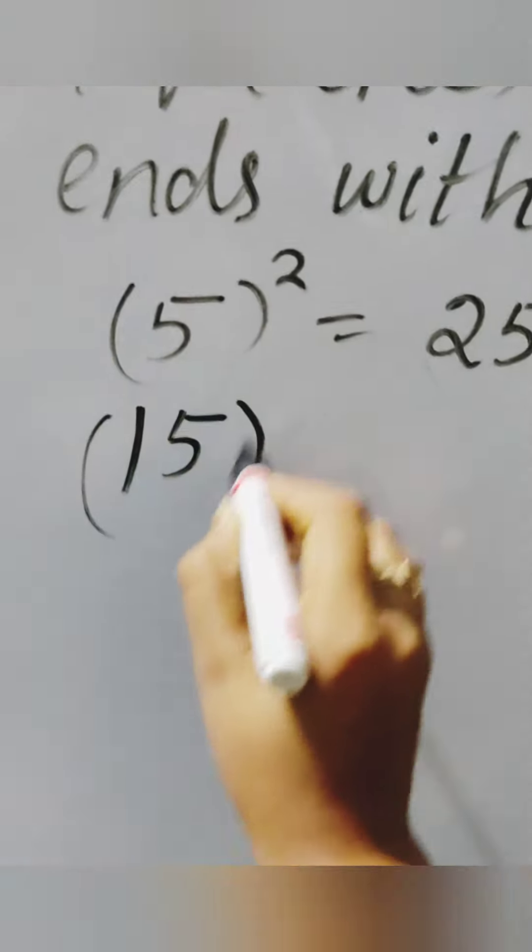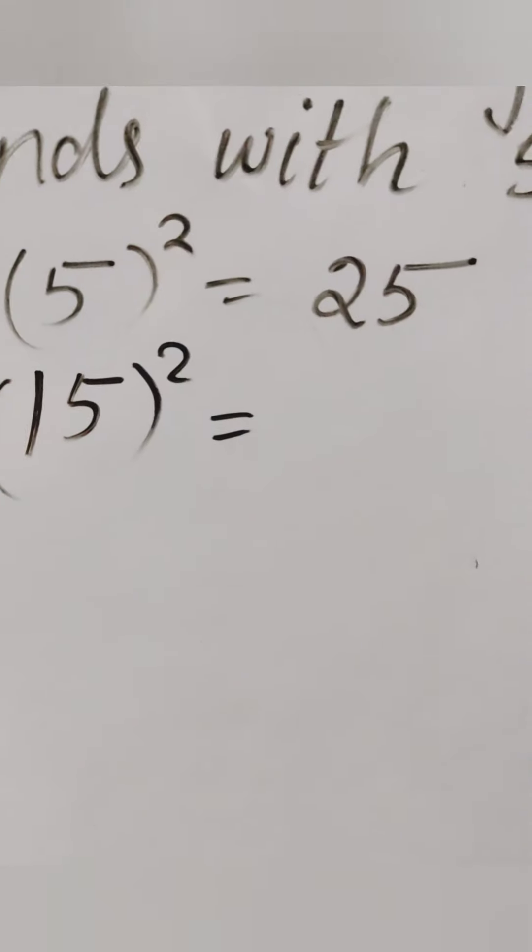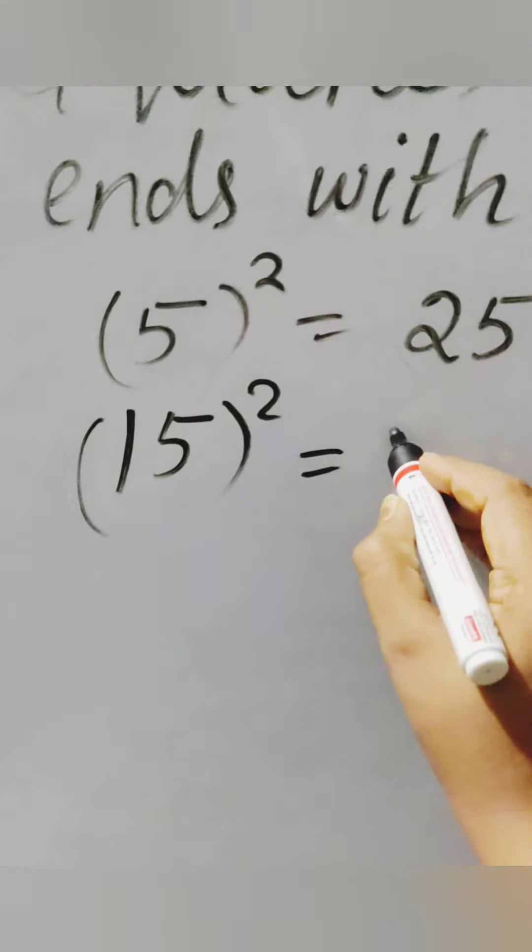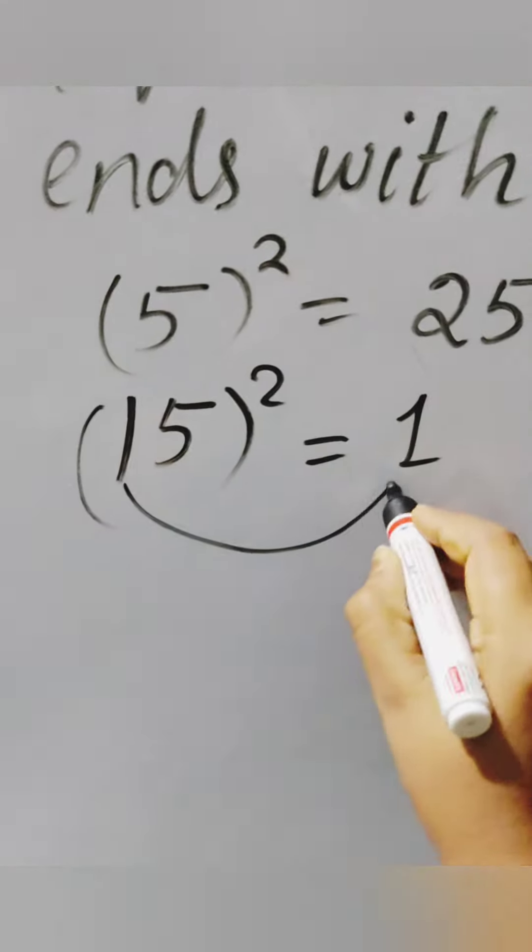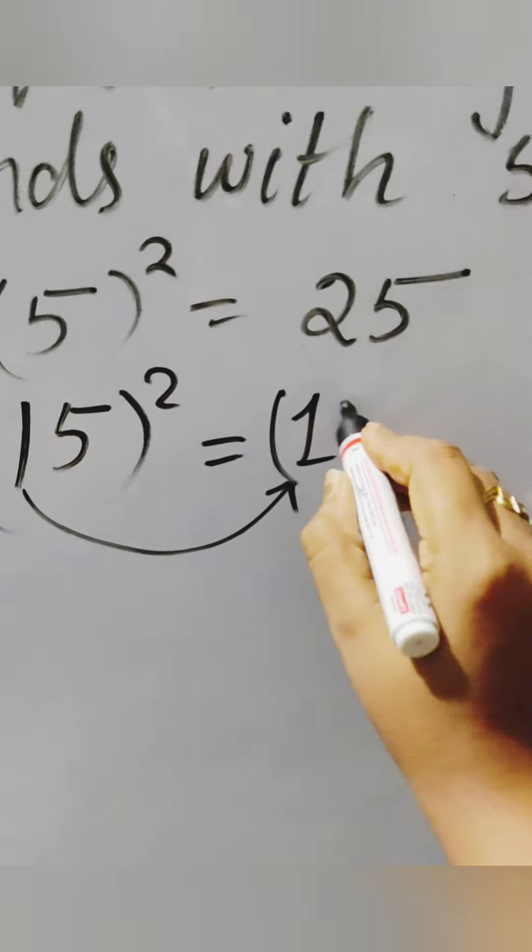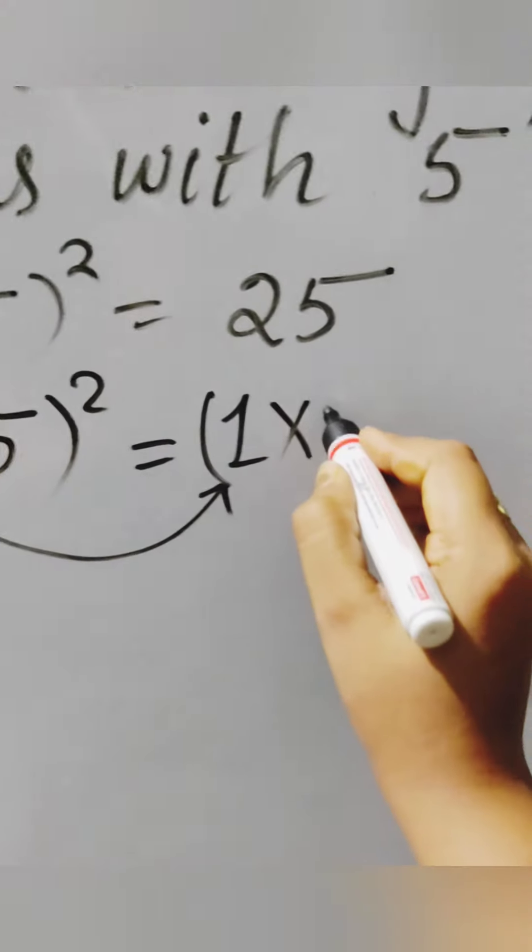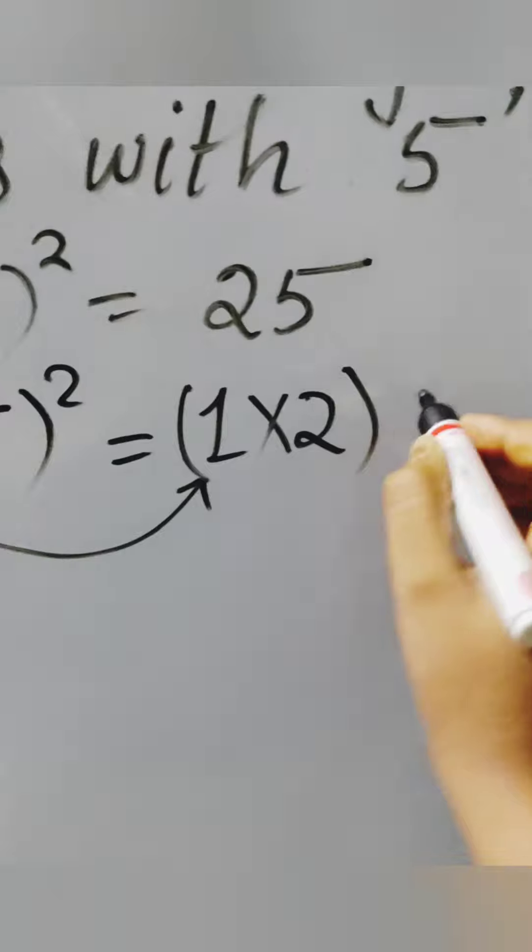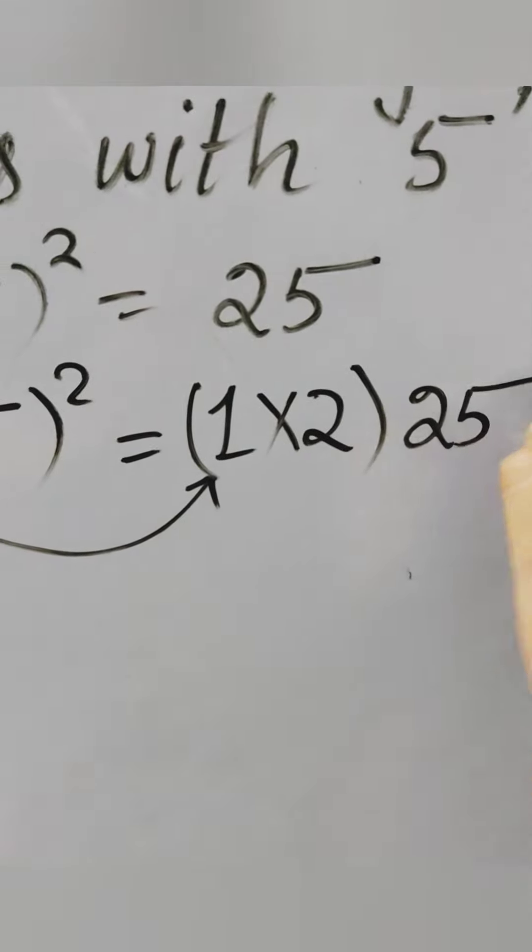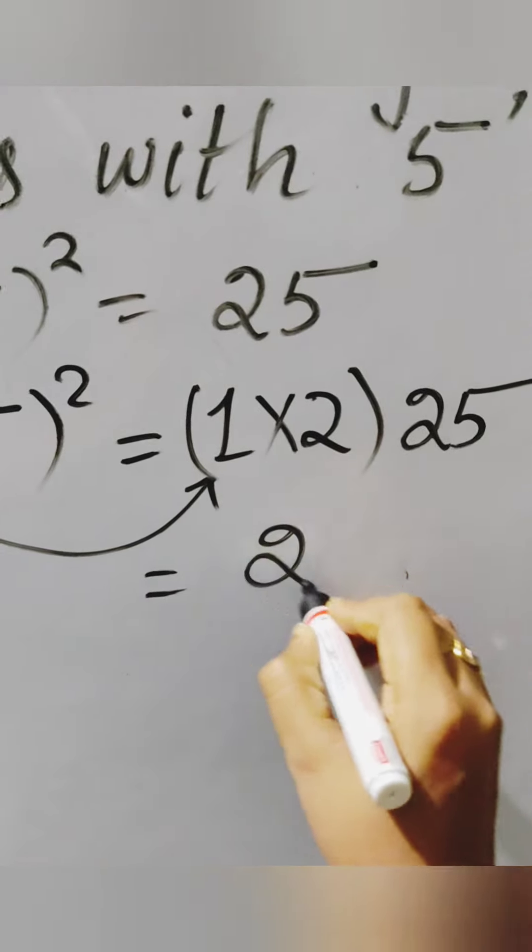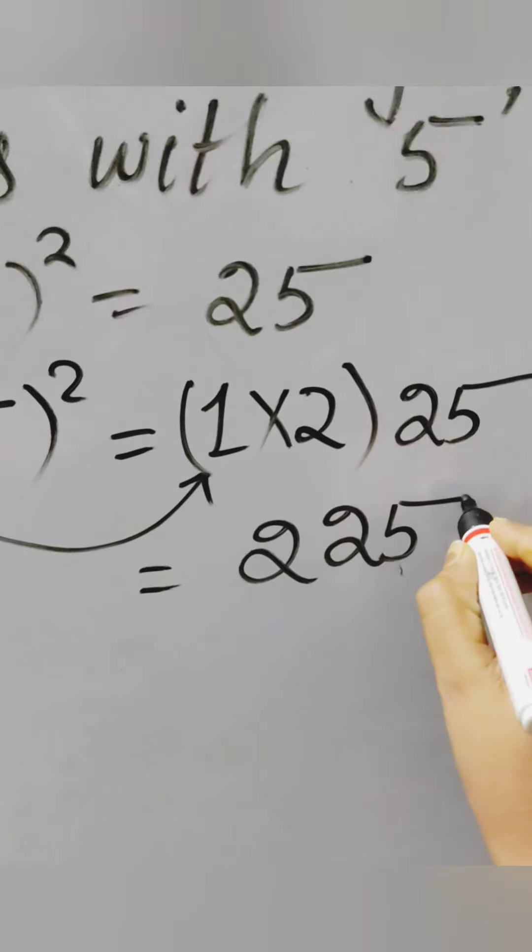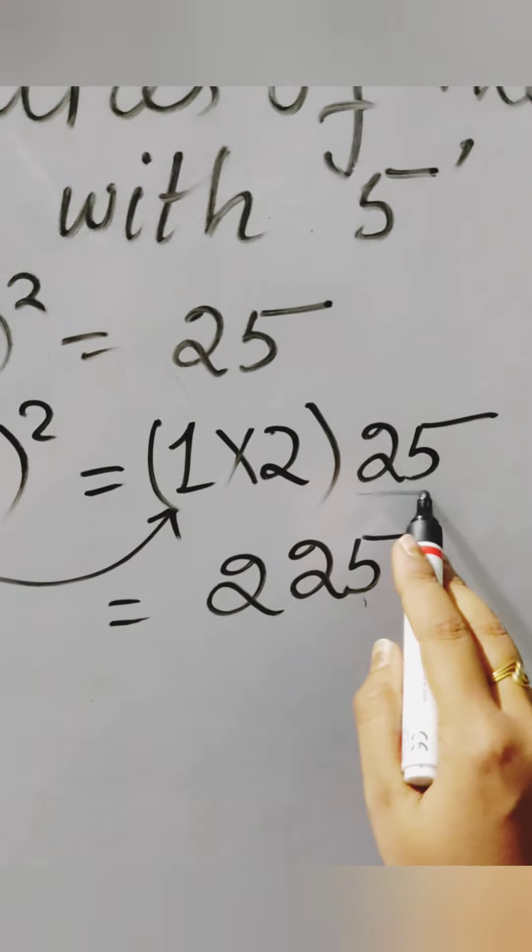Let's find out the square of 15. So what is the digit that you see in the tens? That is 1. And what will come after 1? It's 2. And just write down 5 squared as 25 nearby it. Now 1 times 2 and 25, so the answer is 225.